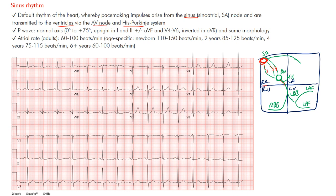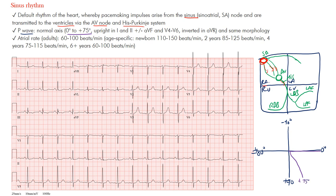Now let's see how we identify sinus rhythm on the EKG. We're going to look for P waves that have a normal axis. The normal P wave axis is between zero and positive 75 degrees. We use these quadrant systems: this is zero degrees, this is positive 90 degrees, this is plus or minus 180 degrees, and this is negative 90 degrees. Everything in this region between zero and positive 75 degrees is what we call the normal P wave axis.